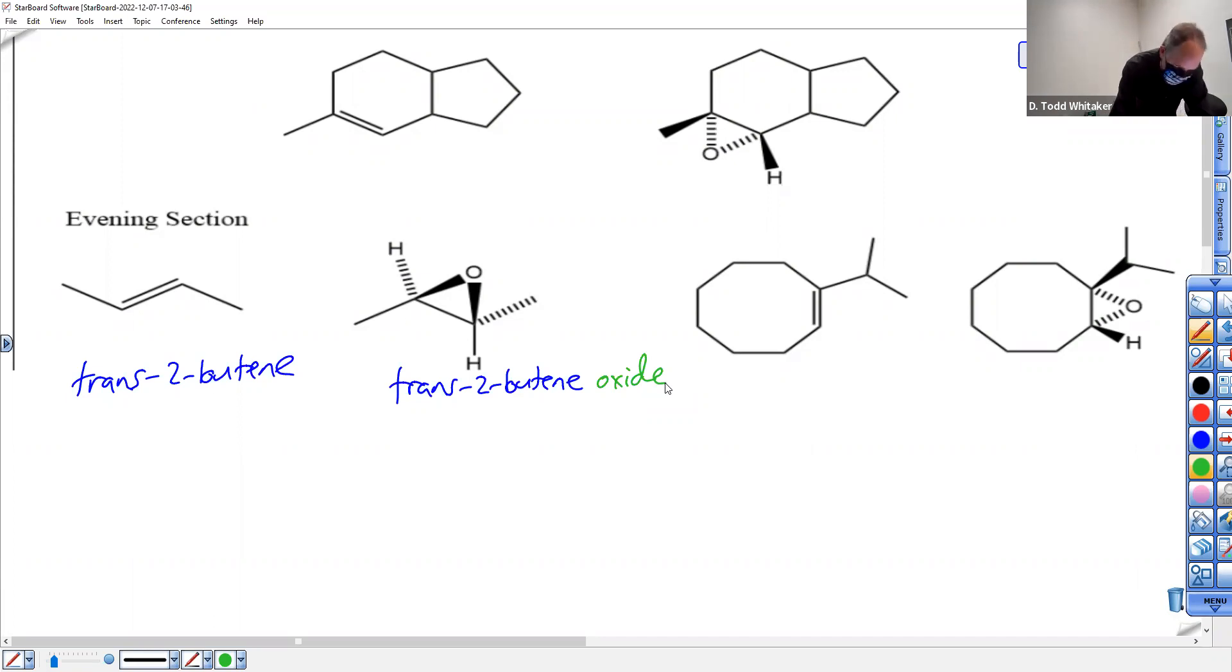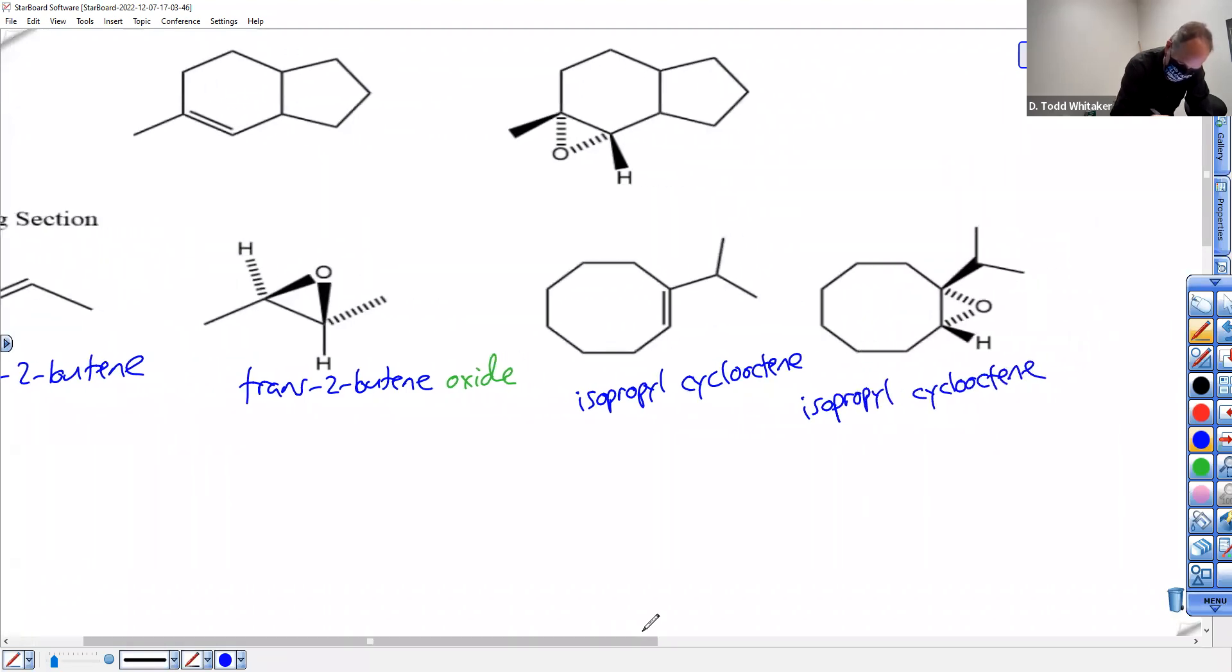So isopropyl cyclooctene becomes isopropyl cyclooctene oxide. Uh-oh, it should be one word there, and oxide is a separate word.